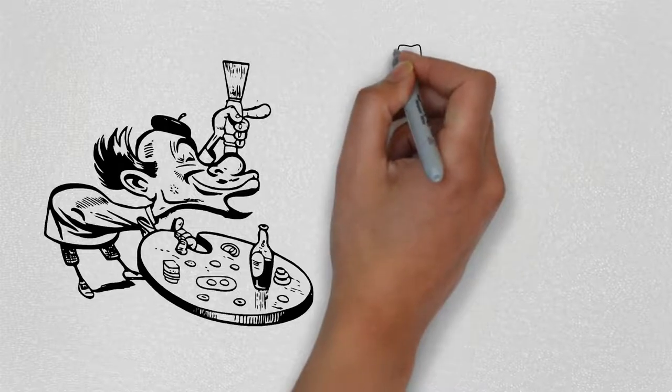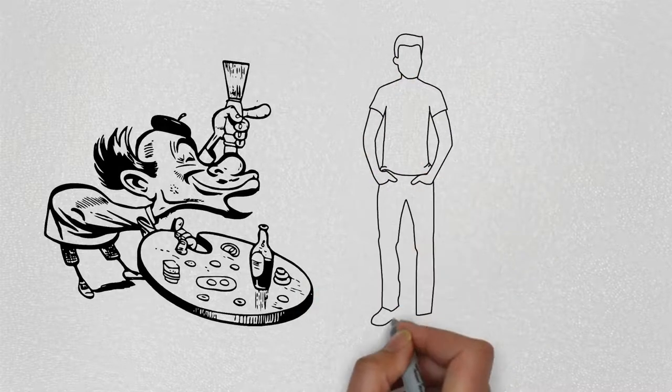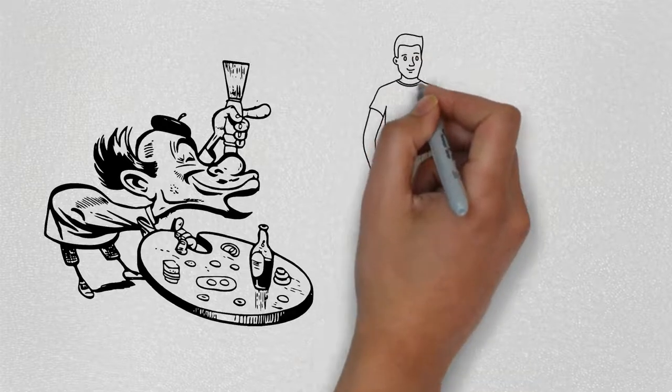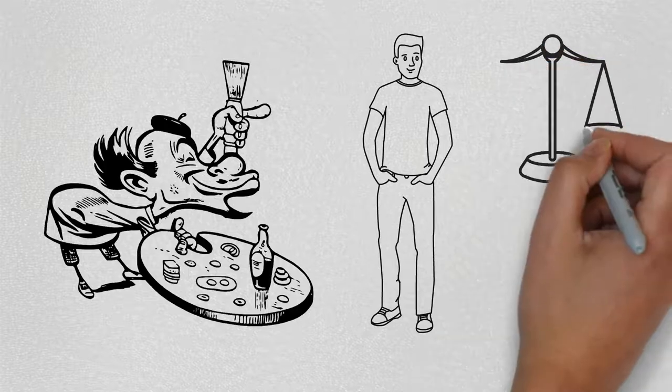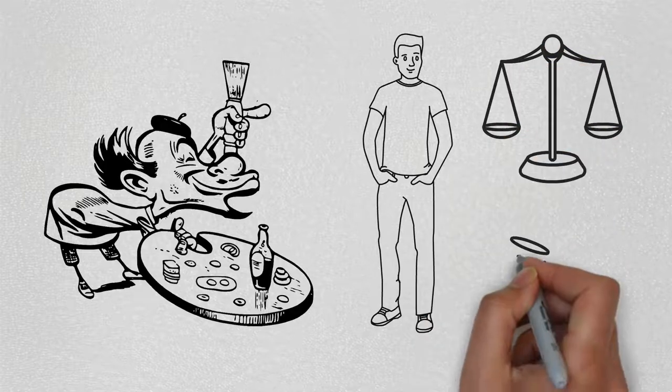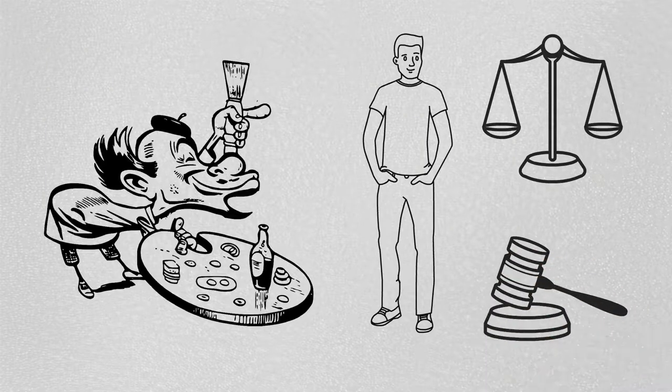Titorelli offers helpful but crushing information about the court, saying that he has never heard of anyone's case leading to acquittal. K's only options are to keep his case active indefinitely by keeping the sensitive judges happy, or temporarily stop the proceedings with the risk that he could be arrested again at any moment.